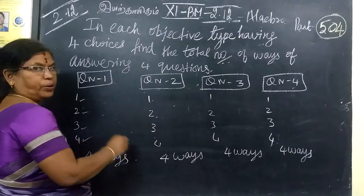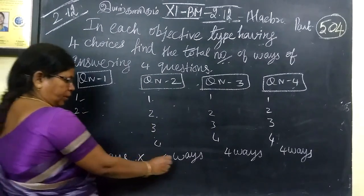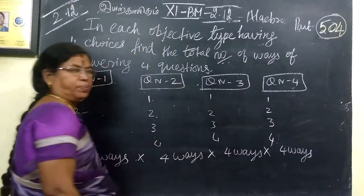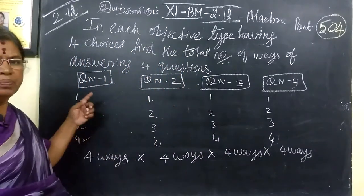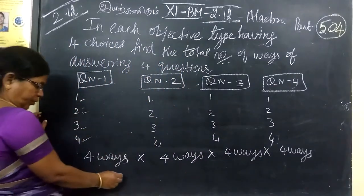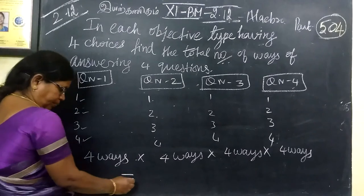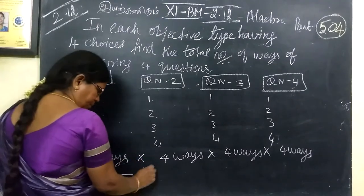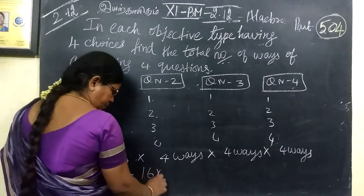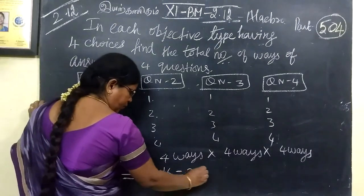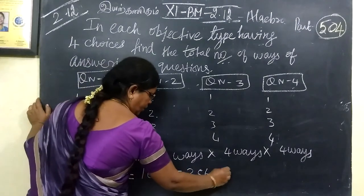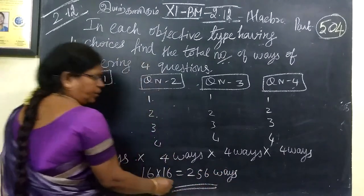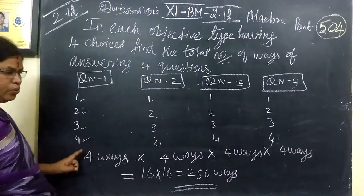By the multiplication principle, you multiply the number of ways together: 4 × 4 × 4 × 4 = 256 ways. So for this case, when you are given an objective-type question with 4 choices each, the total number of ways is 256.